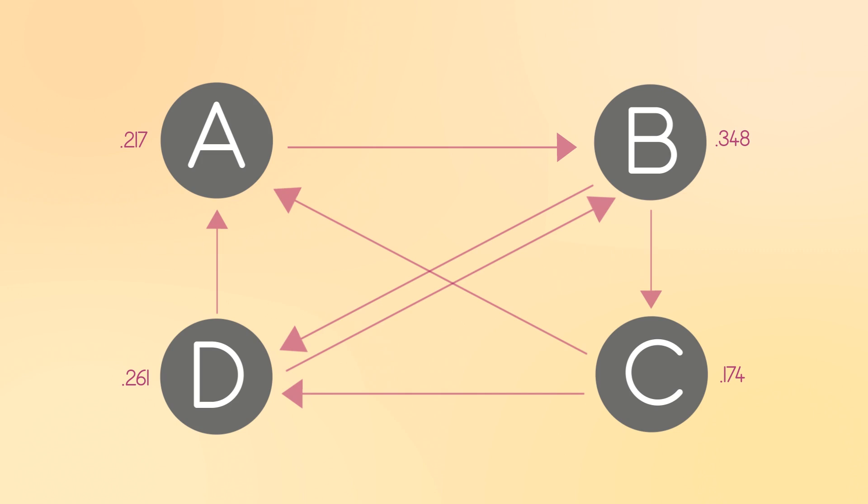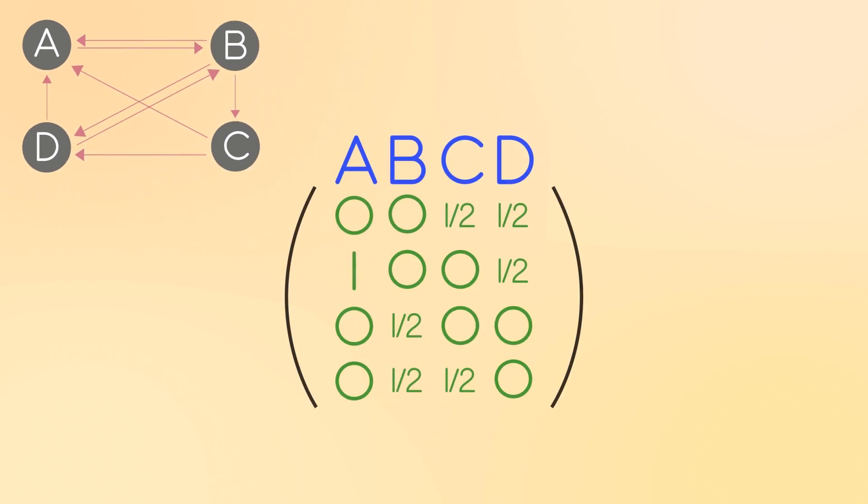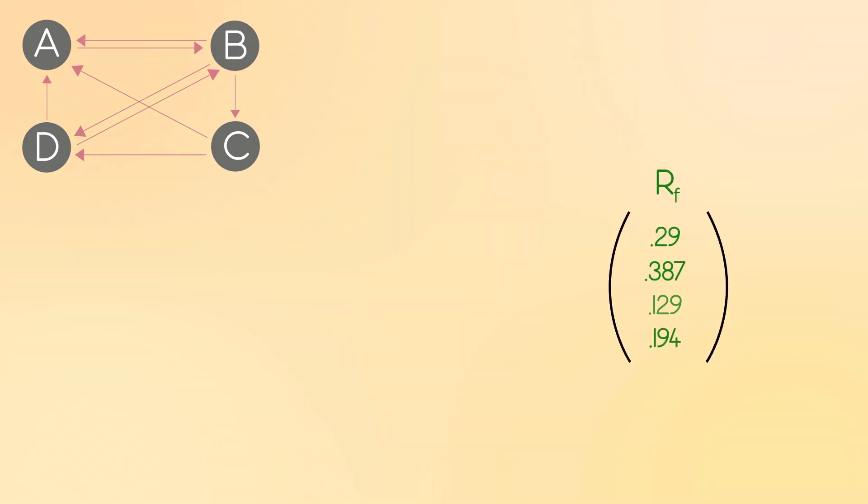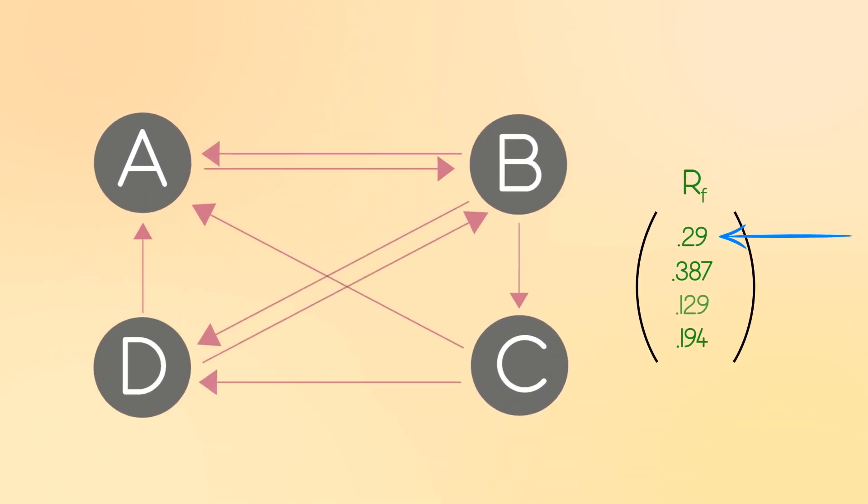So those were the basics. And now adding websites and links to the web just leads to changing the numbers or dimensions of a matrix. If site B now links to A, all we have to do is take our matrix and change the B column, where B will give out one third of its importance to three sites now. Then if we did all those matrix multiplications, these would be the final ranks. So as expected, A has surpassed D in rank since it got a new endorsement.